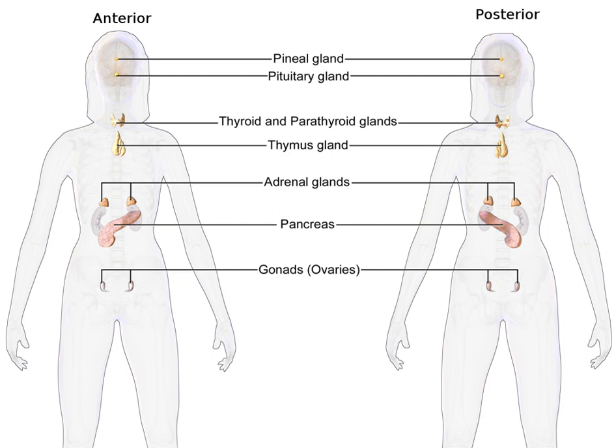Amines, such as norepinephrine, epinephrine, and dopamine, are derived from single amino acids, in this case tyrosine. Thyroid hormones such as 3,5,3 and 3,5,3,5 make up a subset of this class because they derive from the combination of two iodinated tyrosine amino acid residues.